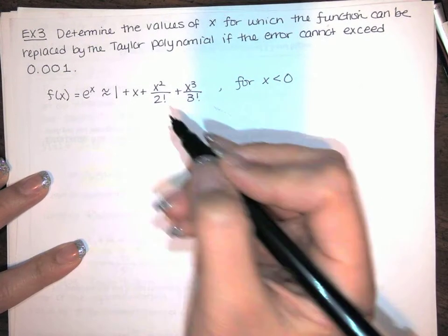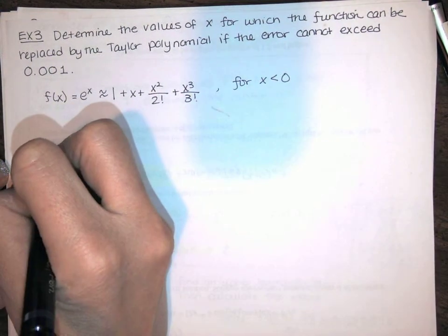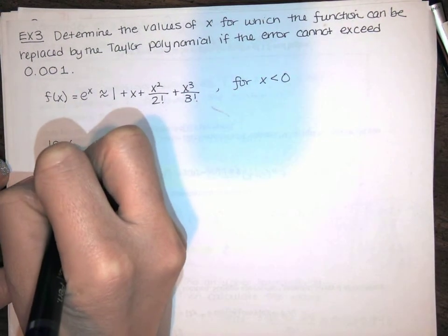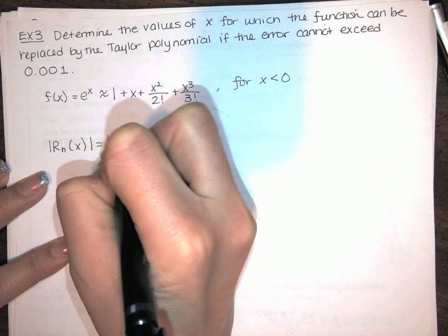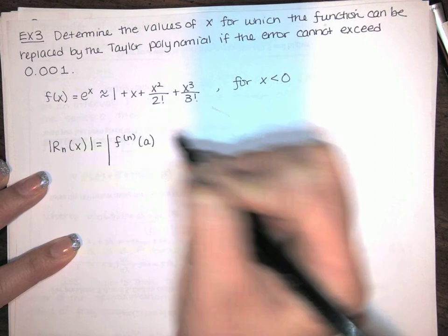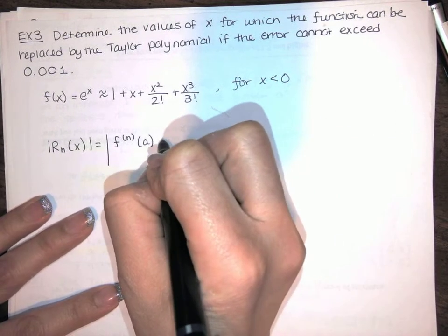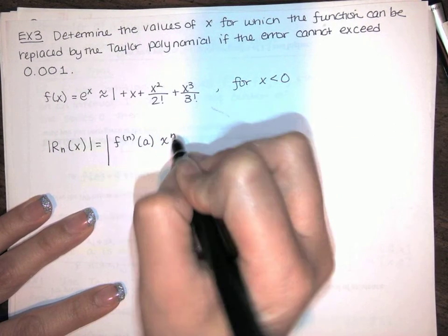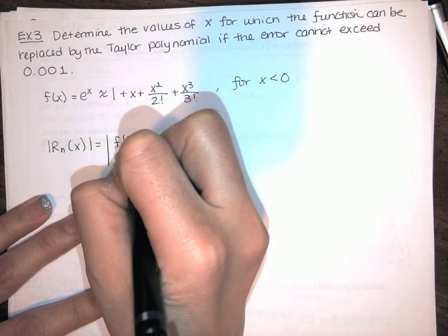So we know this is our Taylor polynomial, and we know that the error in the approximation is equal to this. That should be n plus 1.